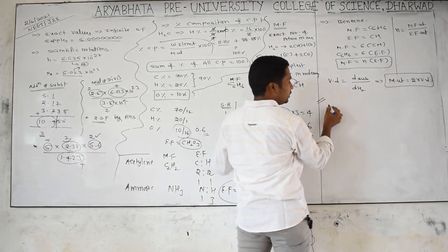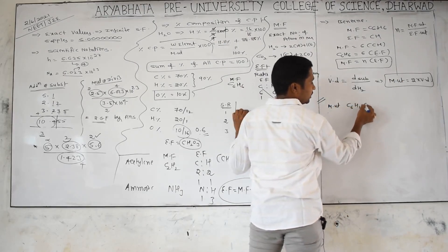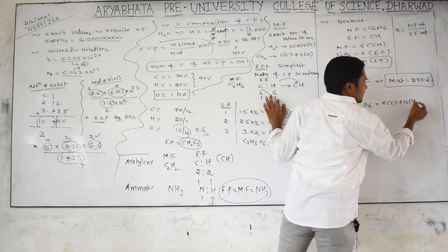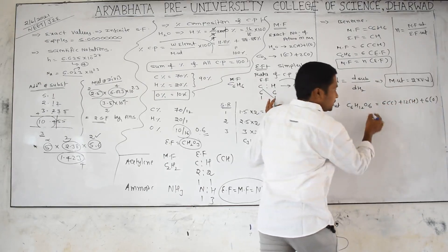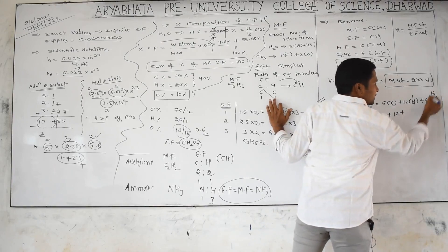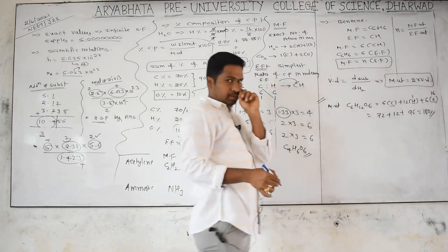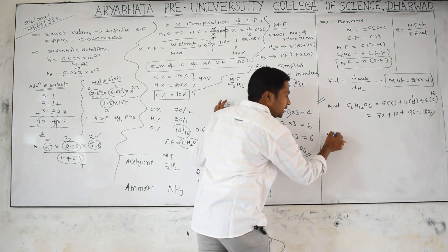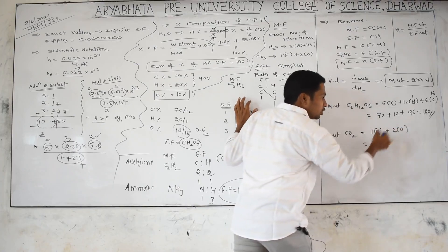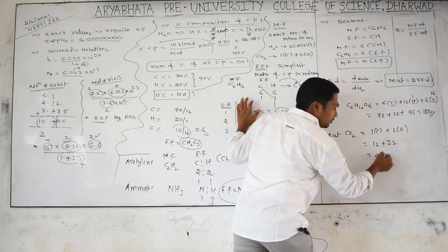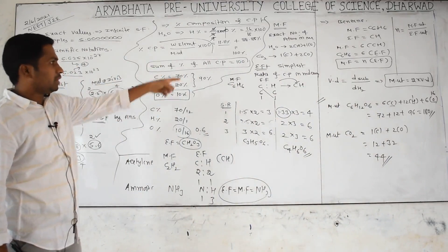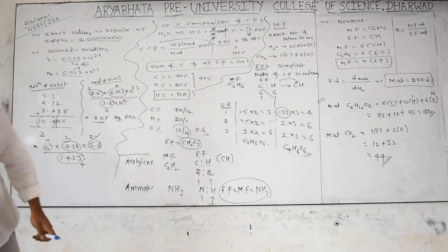For example, molecular weight of glucose C₆H₁₂O₆: 6 carbons × 12 = 72, plus 12 hydrogens × 1 = 12, plus 6 oxygens × 16 = 96, total = 180. Molecular weight of CO₂: one carbon = 12 plus two oxygens = 32, total = 44. Today we discussed percentage composition, empirical formula, molecular formula relation, and how to find molecular masses.